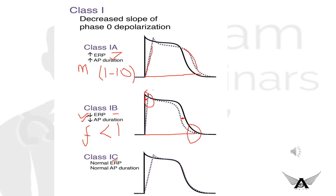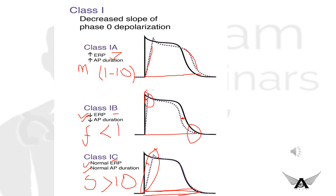Class 1c drugs take more than 10 seconds and are relatively strong blockers of sodium channels. One of the two major 1c drugs is propafenone, which also has some beta-blocking effects. Class 1c drugs have no effect on action potential duration or effective refractory period — the action potential shows a markedly slow phase 0 slope but otherwise normal duration. The 1c drugs are flecainide and propafenone.